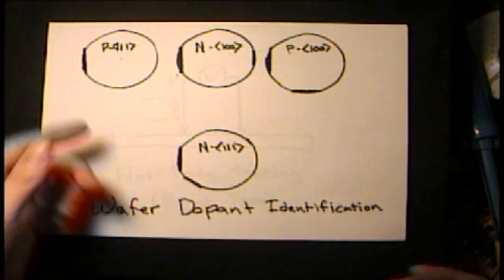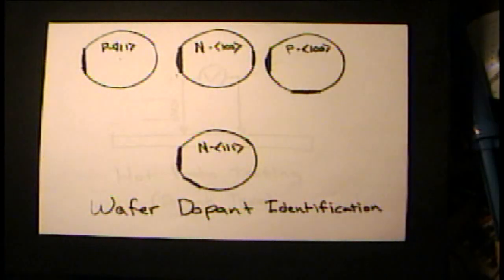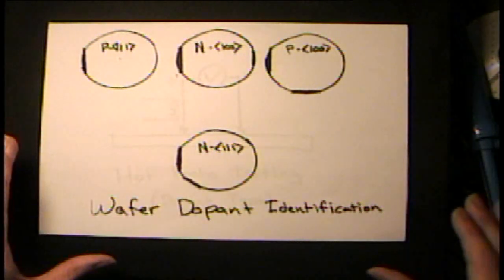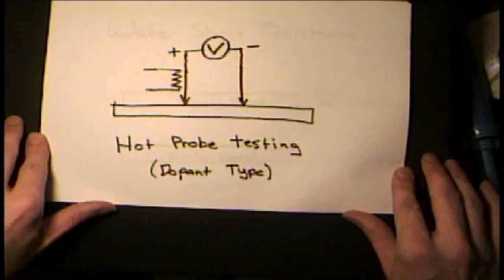But newer wafers, they don't do that because it uses up real estate on the wafer. Now they're trying to utilize every bit of the wafer. So, I want to show how to do hot point wafer identification.